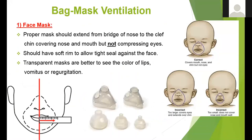So now we have given oxygen, adjusted position, done suction, and placed an oropharyngeal or nasopharyngeal airway to open the airway — but the patient is still not breathing well. The next step is bag and mask ventilation. We have the bag and we have the mask. How do you choose the proper mask?